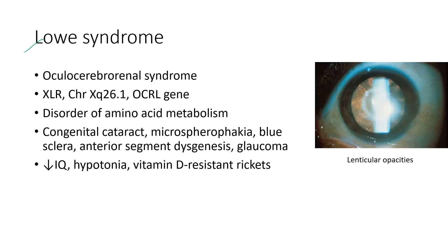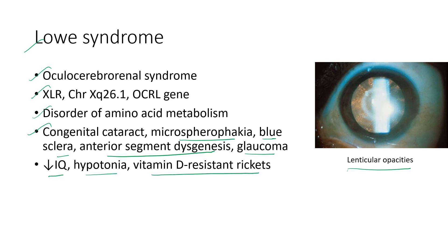Next is Lowe syndrome, also known as oculocerebrorenal syndrome. It is an X-linked recessive condition and a disorder of amino acid metabolism. The clinical features include congenital cataract, microsphaerophakia, blue sclera, anterior segment dysgenesis, and glaucoma. The systemic features include reduced IQ, hypotonia, and vitamin D-resistant rickets.